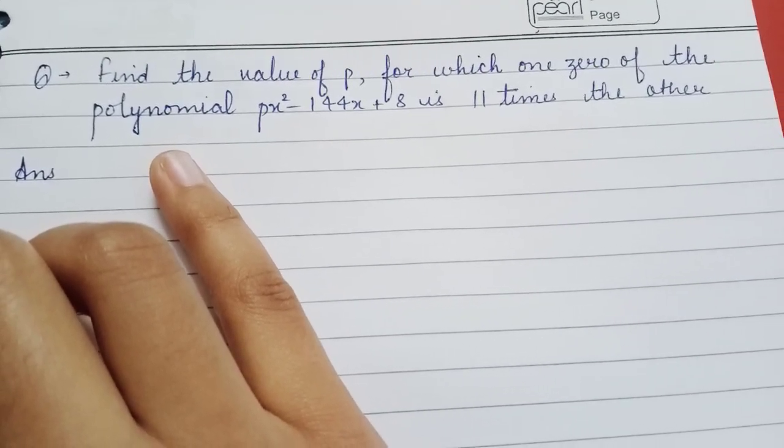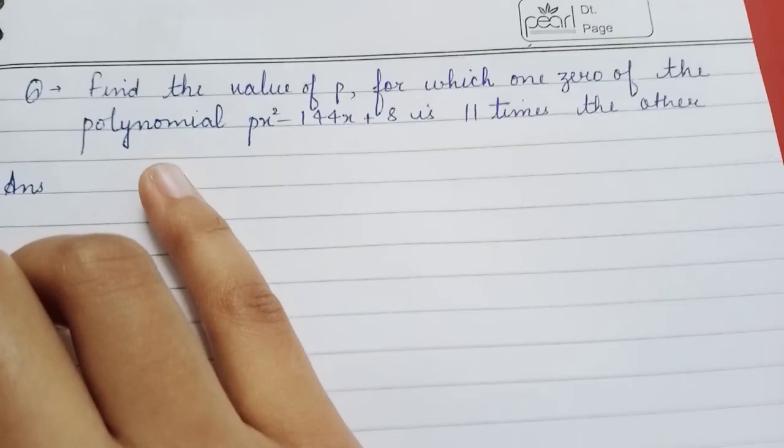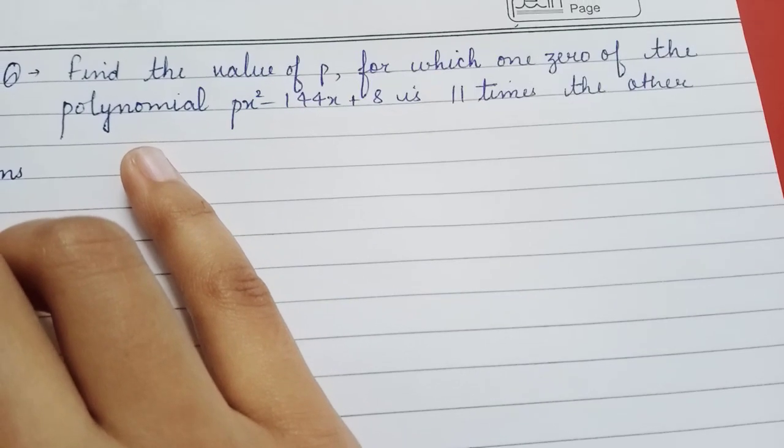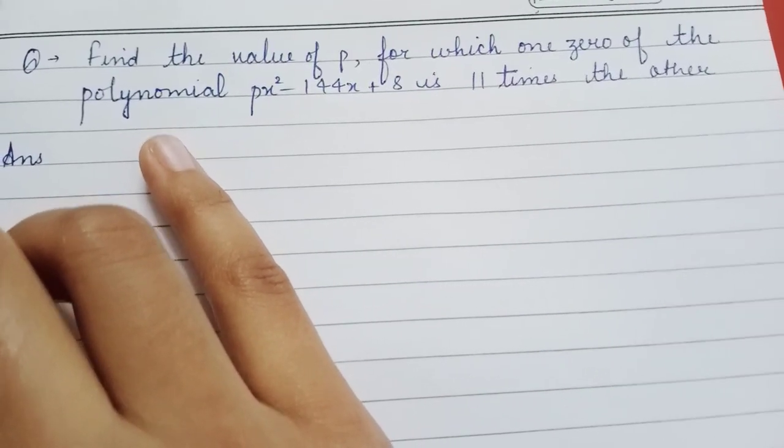Find the value of p for which one zero of the polynomial px² - 144x + 8 is 11 times the other.